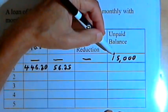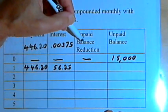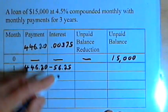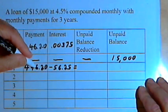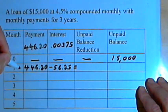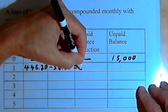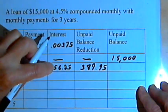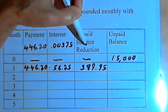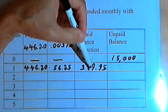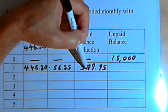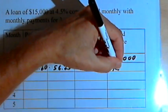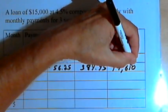The rest of the payment was paying off the principal. So we find the unpaid balance reduction — that's the payment minus the interest. We take the payment of $446.20, subtract the interest of $56.25, and we get $389.95. This is the unpaid balance reduction, meaning it's the amount we're reducing the unpaid balance by. So we subtract $389.95 from $15,000 and get a new unpaid balance of $14,610.05.